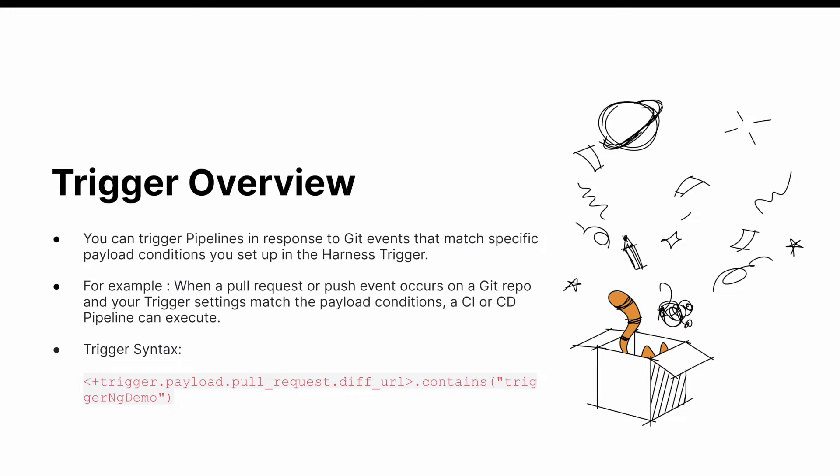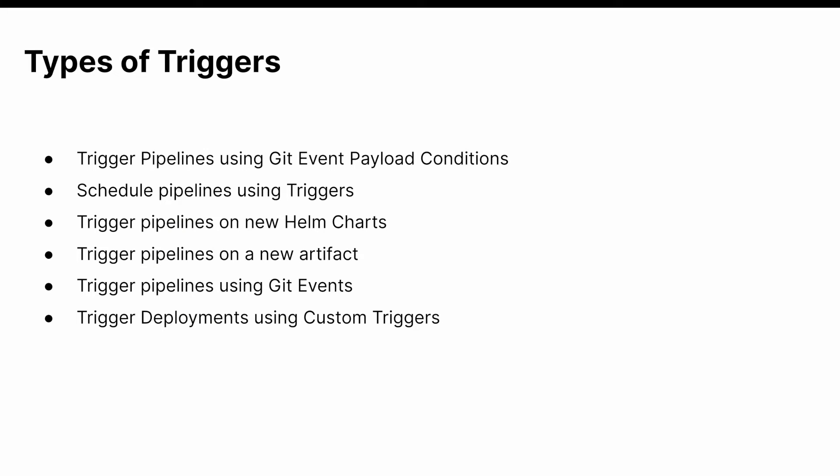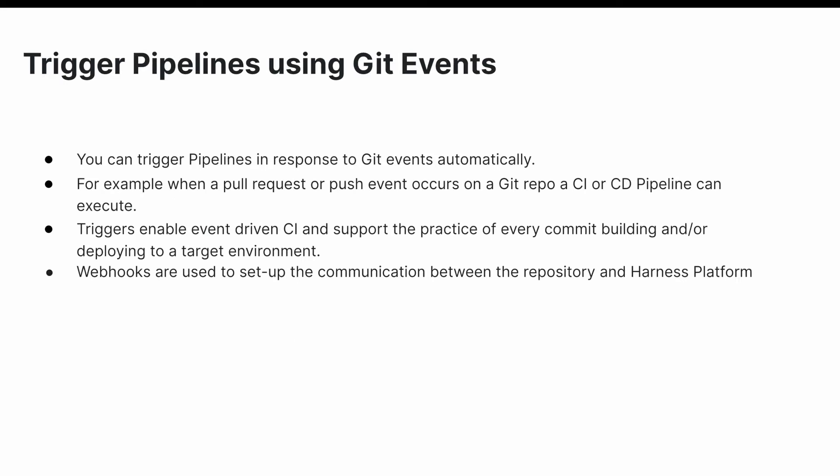What are the different types of triggers in Harness CI? We can trigger pipelines using GitHub and payload conditions, schedule pipelines using triggers, trigger pipelines on new Helm charts, on a new artifact, using GitHub events, and also trigger deployments using custom triggers.